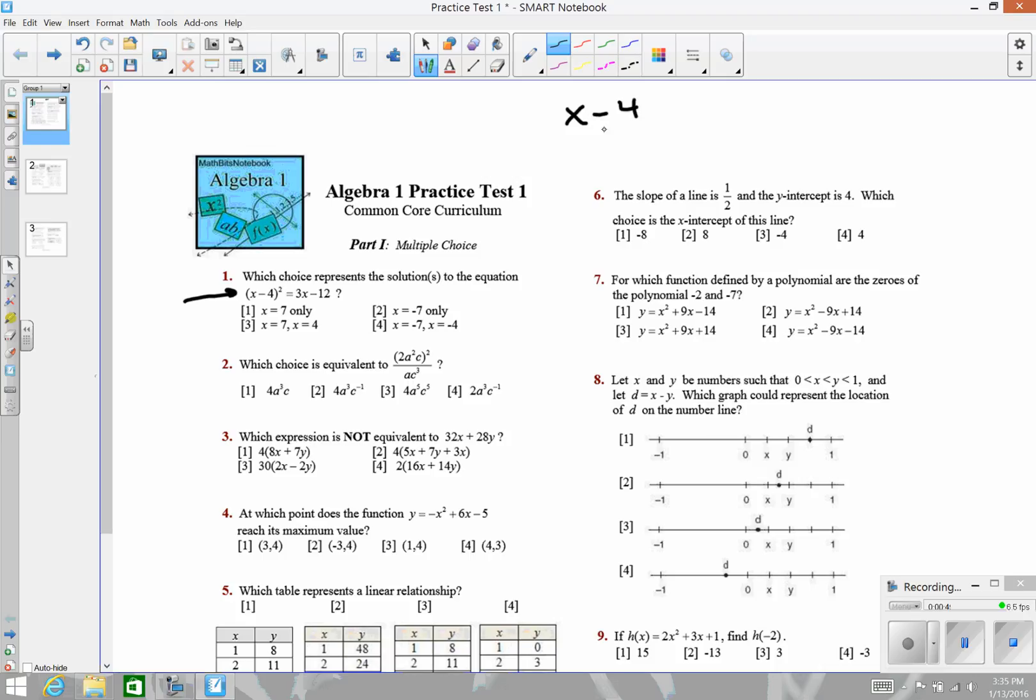x minus 4 times x minus 4, I get x squared minus 4x minus another 4x plus 16. So the left side of that equation is x squared minus 4x and minus 4x, we can combine to be minus 8x plus 16.